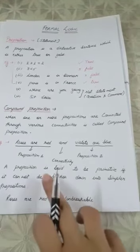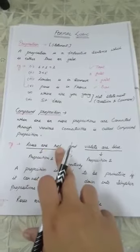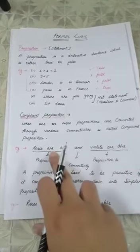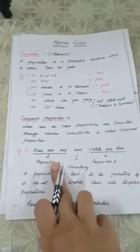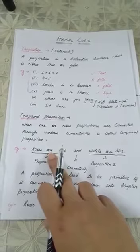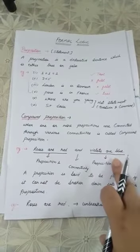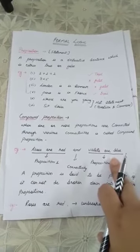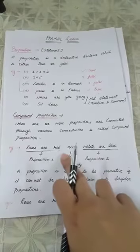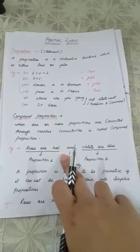Here we can see the example: 'Roses are red and violets are blue.' Roses are red is one proposition and violets are blue is second proposition, and we connected both of them with the connectivity 'and.'